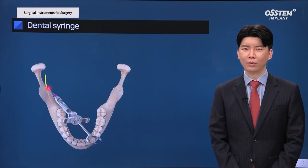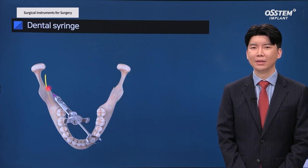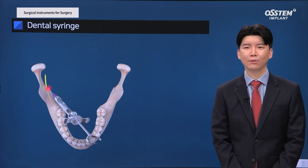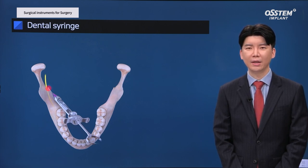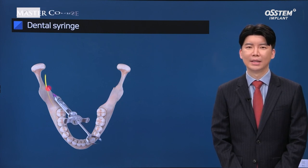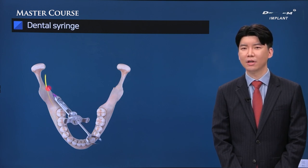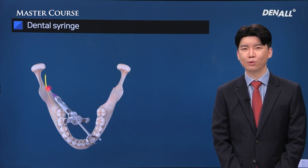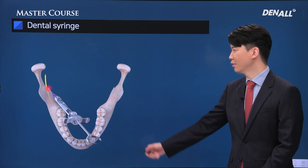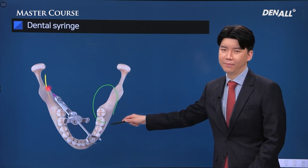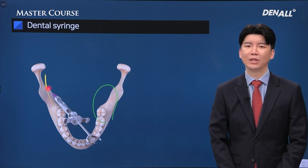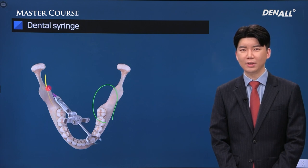Surgery is performed under anesthesia. Ideally, one anesthesia administration will be sufficient for the surgery, but at times anesthesia may wear off or additional anesthesia may be necessary. Anesthesia syringe and ampoule should be prepared ahead of time — this can be very useful.